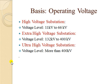The next basis is operating voltage. High voltage is up to 66 kV. Extra high voltage (EHV) starts from 132 kV up to 400 kV. More than 400 kV is ultra high voltage (UHV). In India, 800 kV is currently operating, and 1200 kV is currently in testing at Bina.